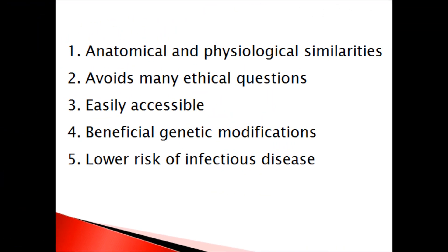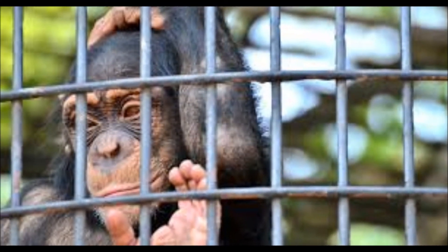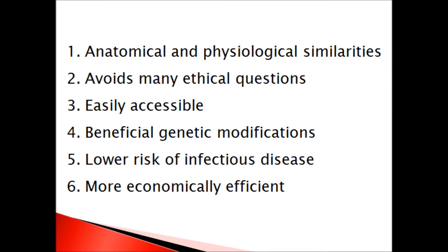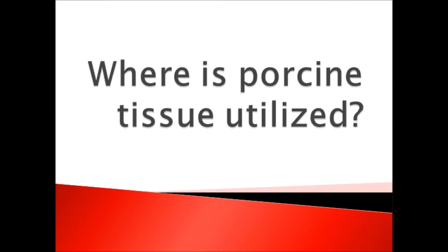Number five, lower risk of infectious disease. Though cross-species infection from a retrovirus is still a concern of the FDA, porcine tissues are less likely to cause disease than primates. Number six, more economically efficient. Due to the large pool of availability in donors, it is more economically efficient to use something that's already mass-produced.